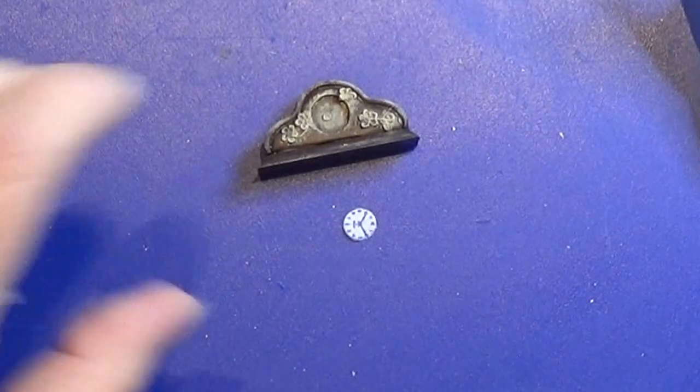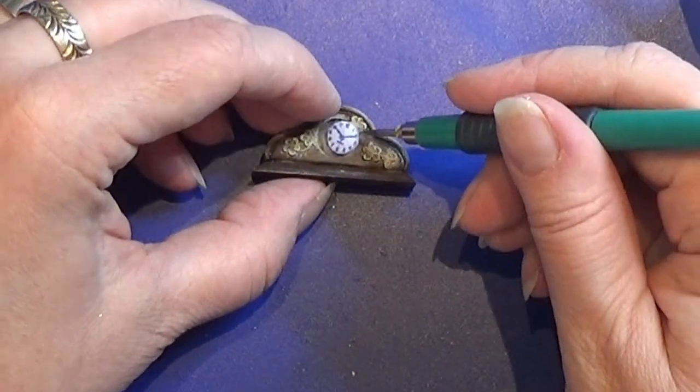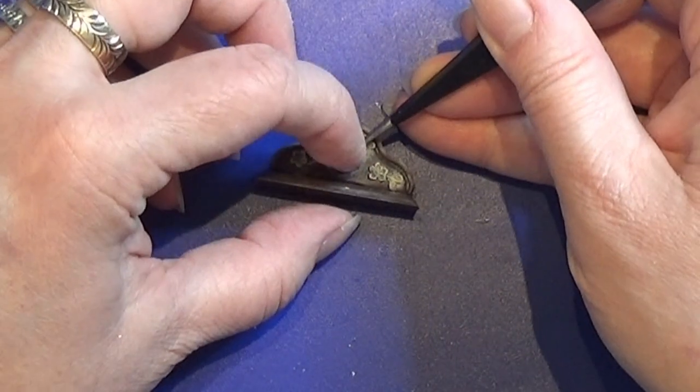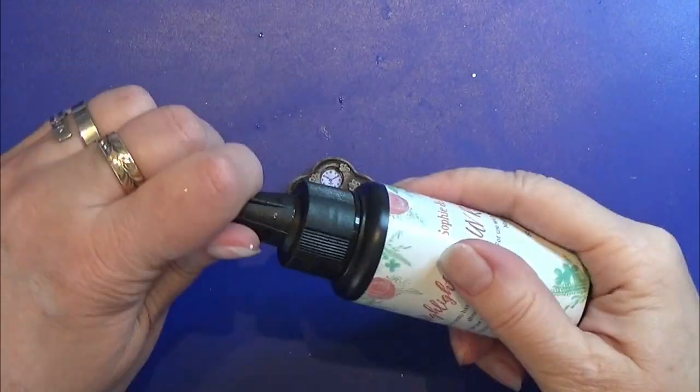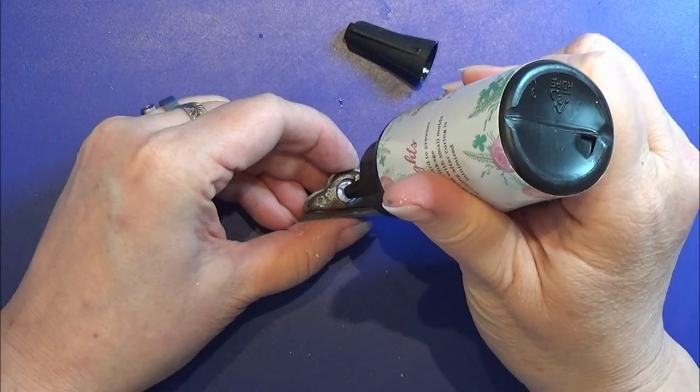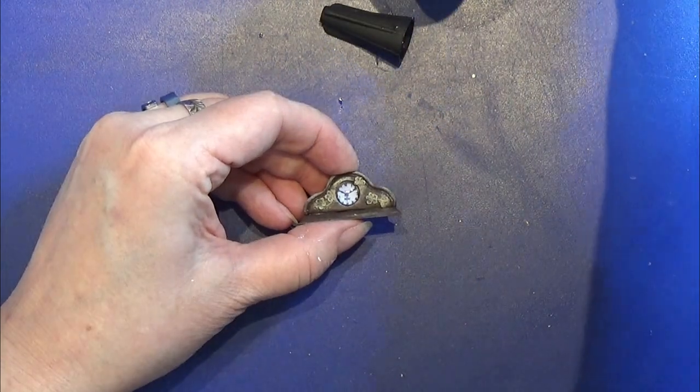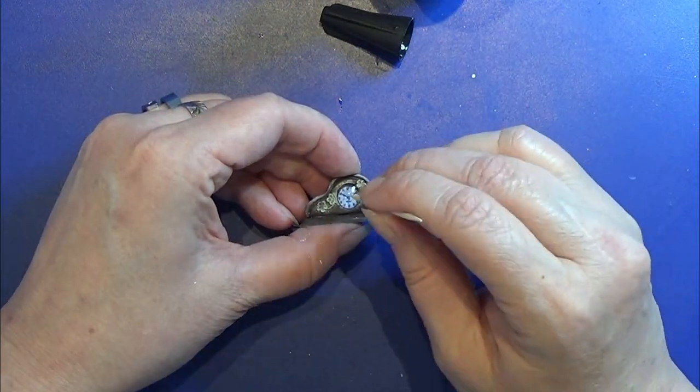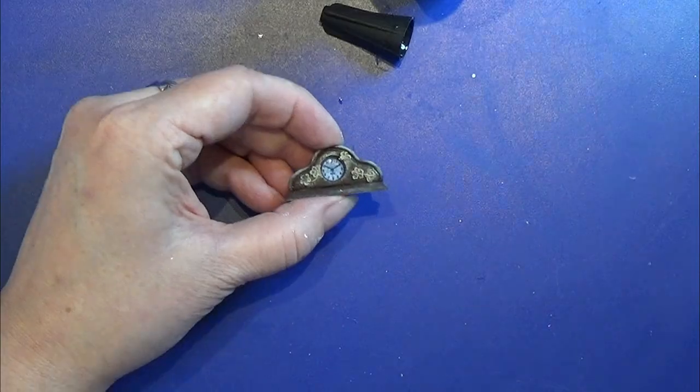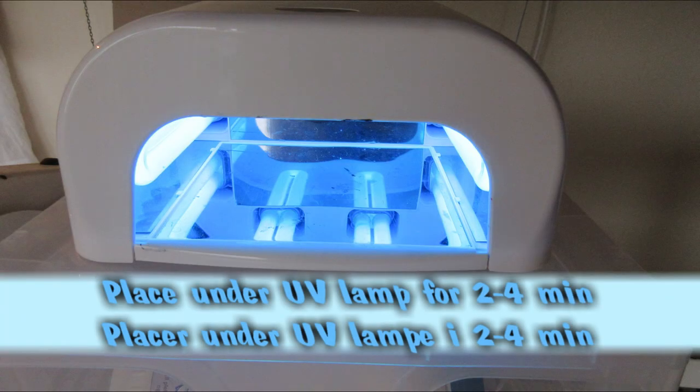I cut out the clock face and I'm going to glue that in with a tiny bit of super glue. Then I took a tiny bit of UV resin and placed it onto this little face, and I used a toothpick to make sure it was all out to the edges, and I placed it under my UV light.